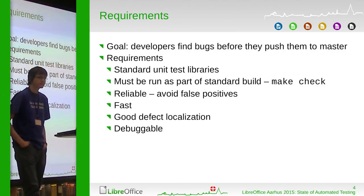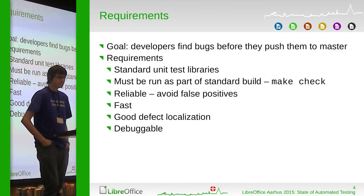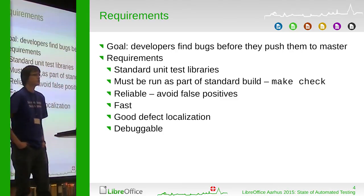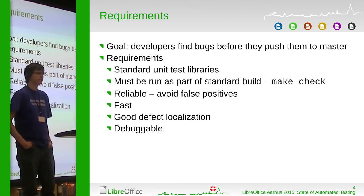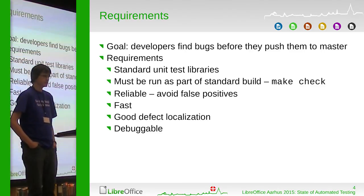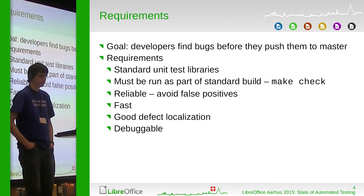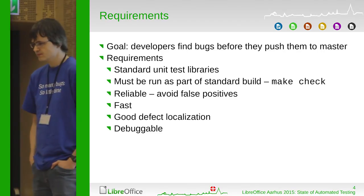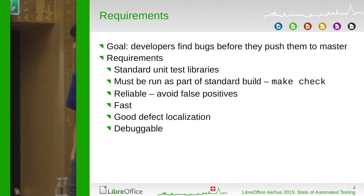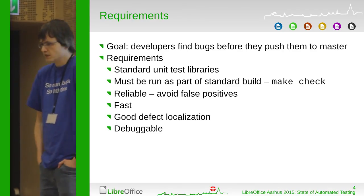The next requirement is we want to have reliable tests. It's not very useful to have tests that fail randomly one percent of the time, because that trains developers to avoid running the tests and not trust the results — obviously a bad scenario. Also, the tests have to run quickly; we don't want developers to wait 10 hours for test results because then they won't run them every day.